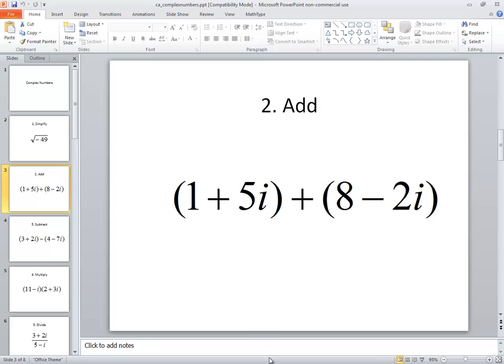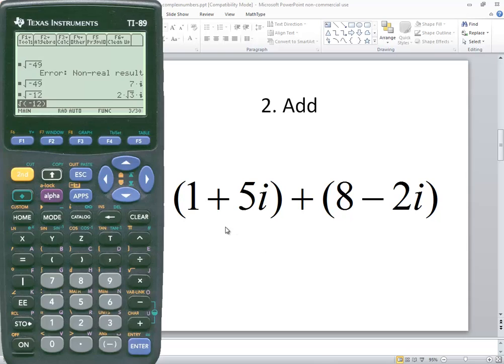To add complex numbers together, you pretty well just type in exactly as you see it. So I do a beginning parentheses 1 plus 5, now the i is above your catalog so if I do second catalog that gives me my i